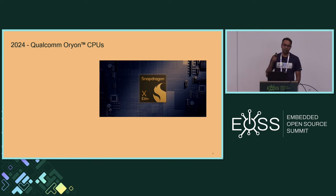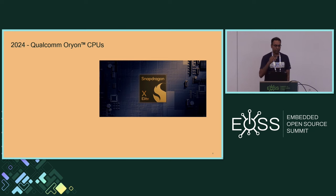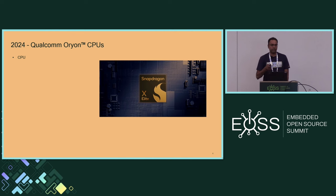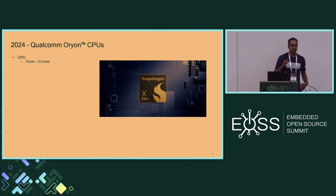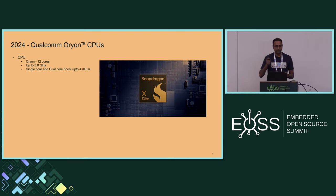So coming to 2024, what's different? From a hardware point of view, the big difference is the CPU itself. The CPU is a custom CPU done by Qualcomm — this is the first generation of the custom CPU, which we call Orion. The X-Elite comes with 12 identical Orion cores, split into three clusters of four CPUs each. They can go all the way up to 3.8 GHz.